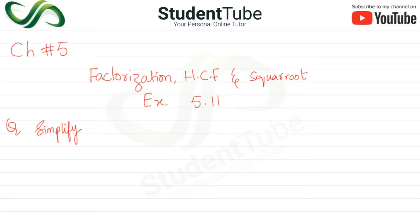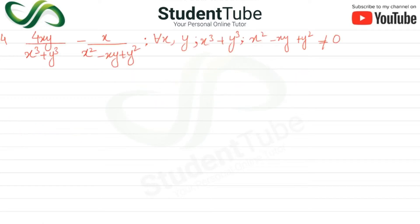Question number 4: simplify 4xy upon (x³ + y³) minus x upon (x² - xy + y²), where x and y are such that x³ + y³ and x² - xy + y² are not equal to zero.